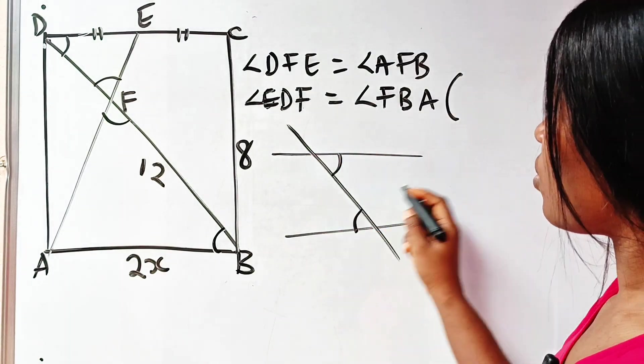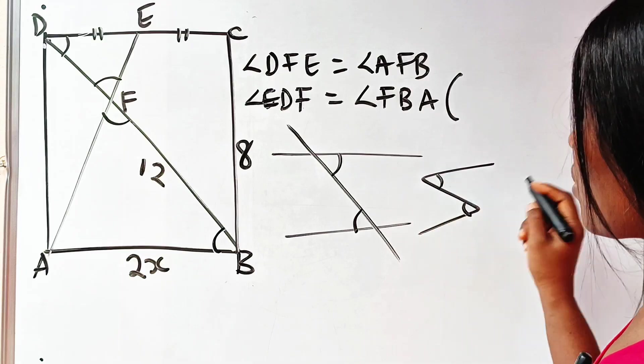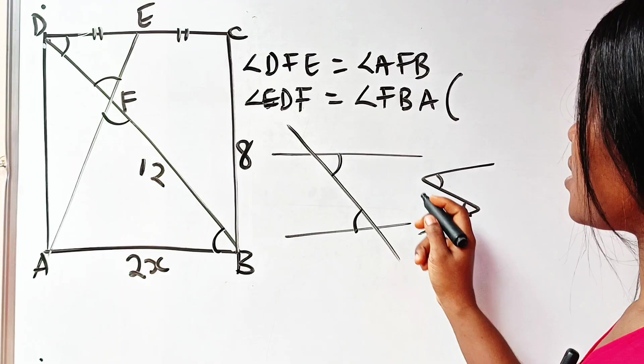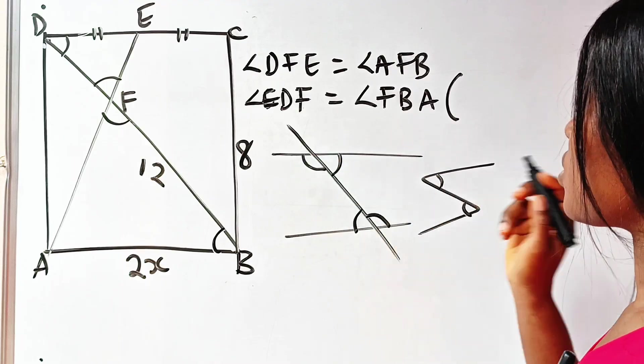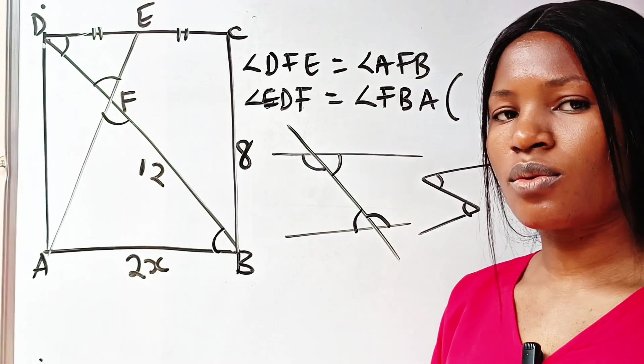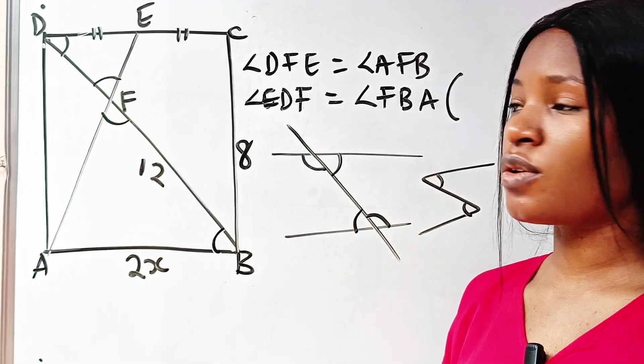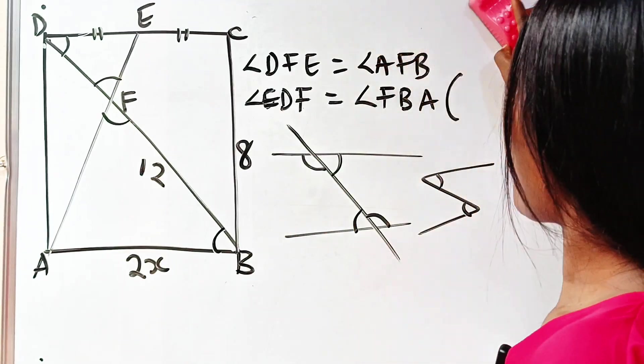We call it the Z angle. They are alternate angles. Similarly, if I draw this this way, this angle here will also be equal to this angle there. They are all alternate angles.